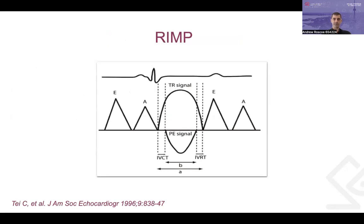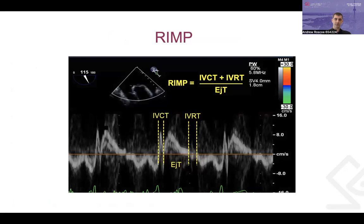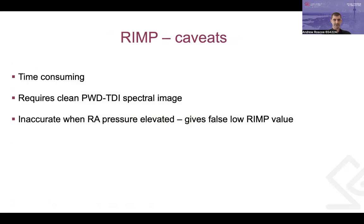The myocardial performance index — the Tei index — for the RV uses the tissue Doppler waveform seen earlier. It is somewhat time-consuming to perform all the calculations and requires a very clean spectral Doppler waveform for accurate measurements. One key downside is that when RA pressure is elevated, it produces falsely low myocardial performance index values, suggesting the RV is functioning adequately when it may not be.